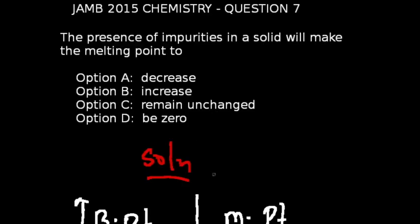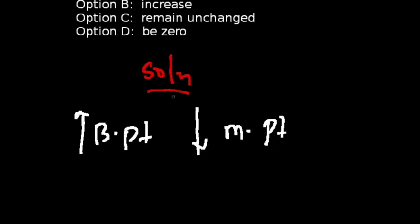Question 7 of JAM 2015 chemistry exams: The presence of impurities in a solid will make the melting point — the correct answer is option A, which is decrease. An easy way to remember this: presence of impurities increases boiling points and decreases melting points.